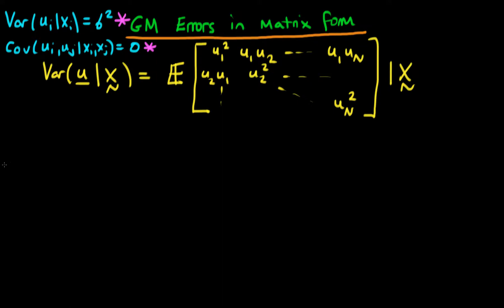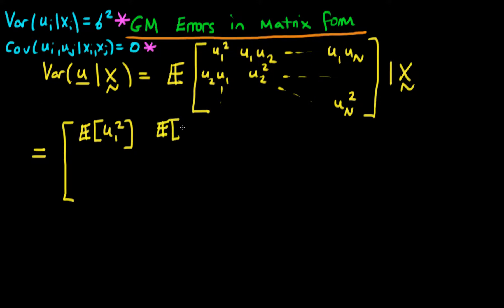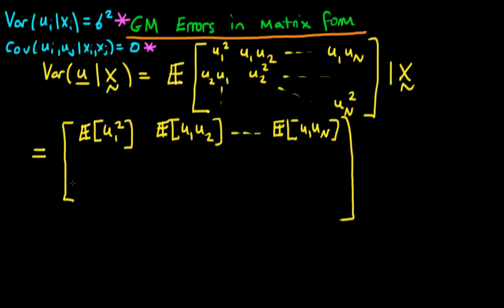If we continue to work with this, we know that the expectation of a matrix is just the same thing as the matrix of the individual expectations. I'm going to forgo writing 'given x' here just because it will become really messy, but essentially this is just equal to the matrix where the first component is the expectation of u1 squared, the second component in the first row is the expectation of u1 times u2, and the last component in that row is the expectation of u1 times u_n.